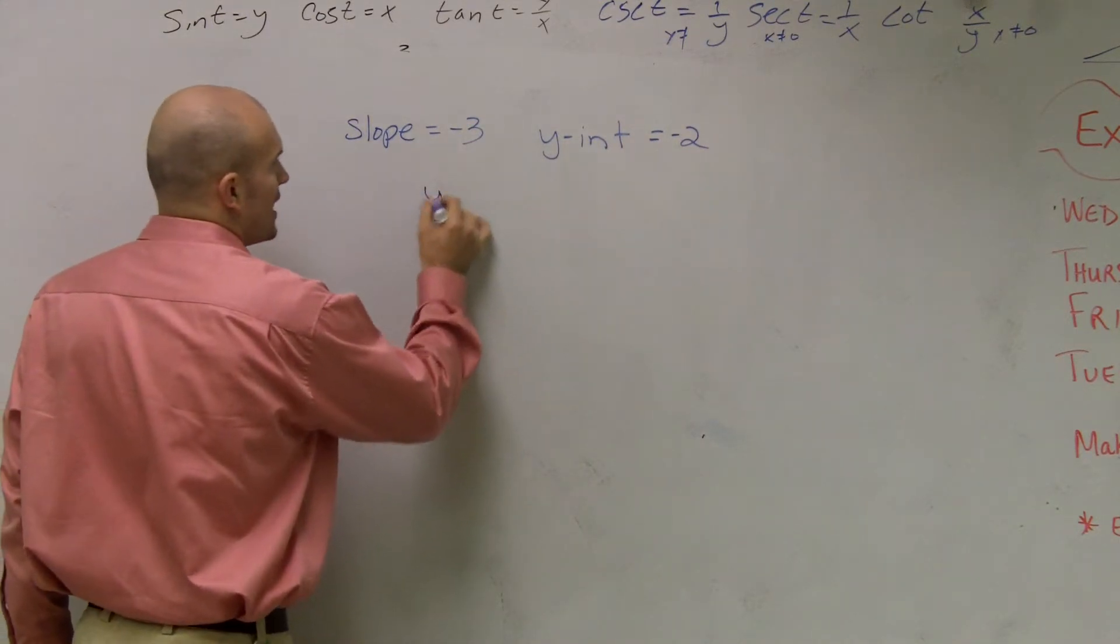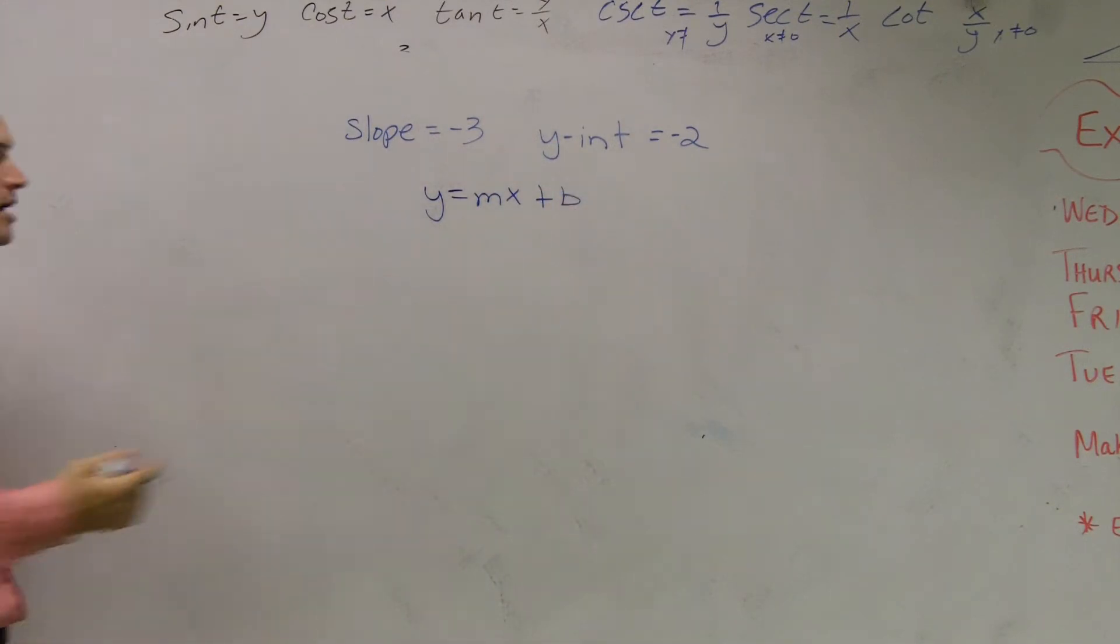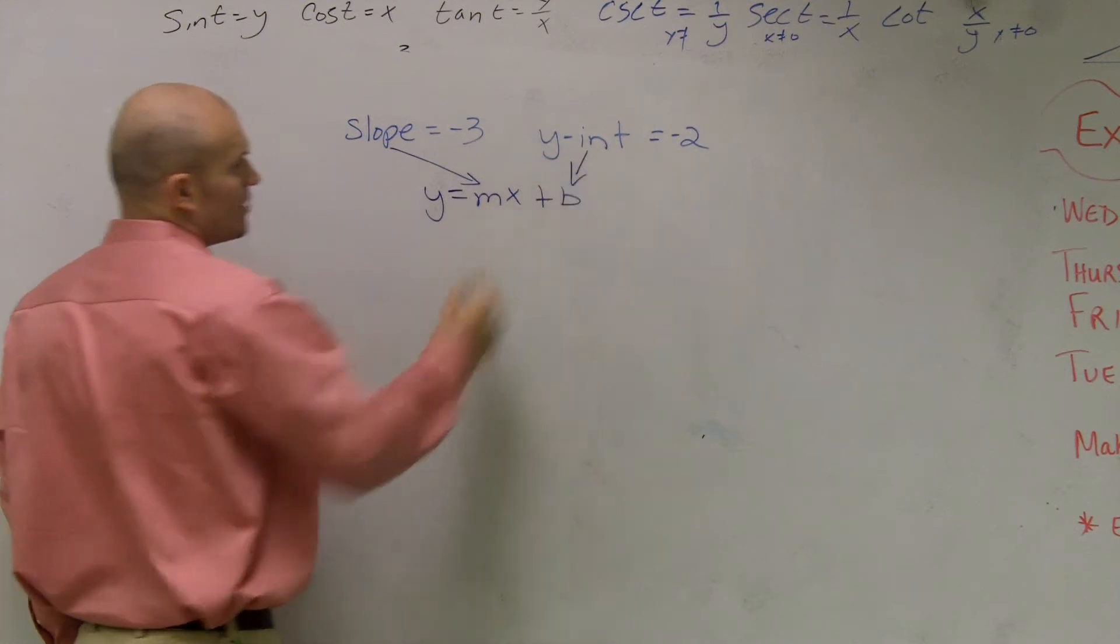Remember, slope-intercept form is y equals mx plus b. And you're going to have to keep on remembering m is your slope, and b represents your y-intercept.